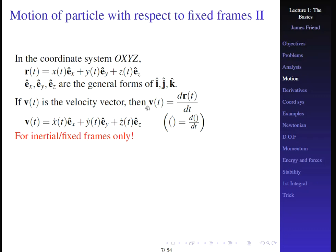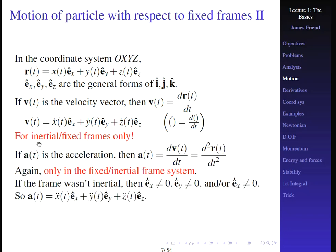If V is the velocity vector, then V equals the time derivative of R. So V = Ẋ·Ê_X + Ẏ·Ê_Y + Ż·Ê_Z, where the dot above a variable represents the time derivative. This only works for inertial or fixed frames, because if the coordinate system is rotating, there will be additional time derivatives for each unit vector that we are currently ignoring.